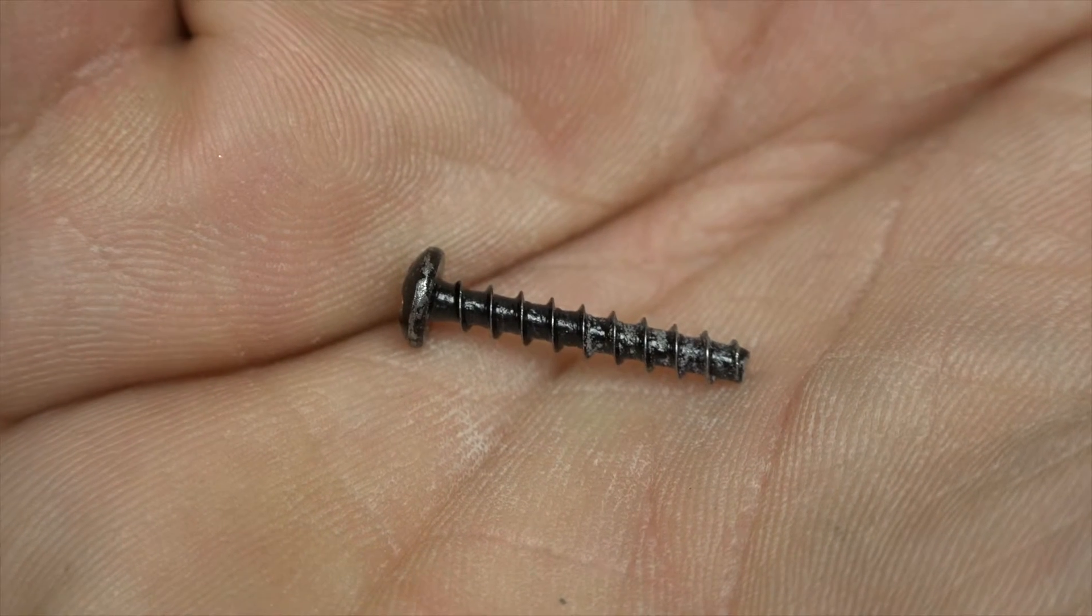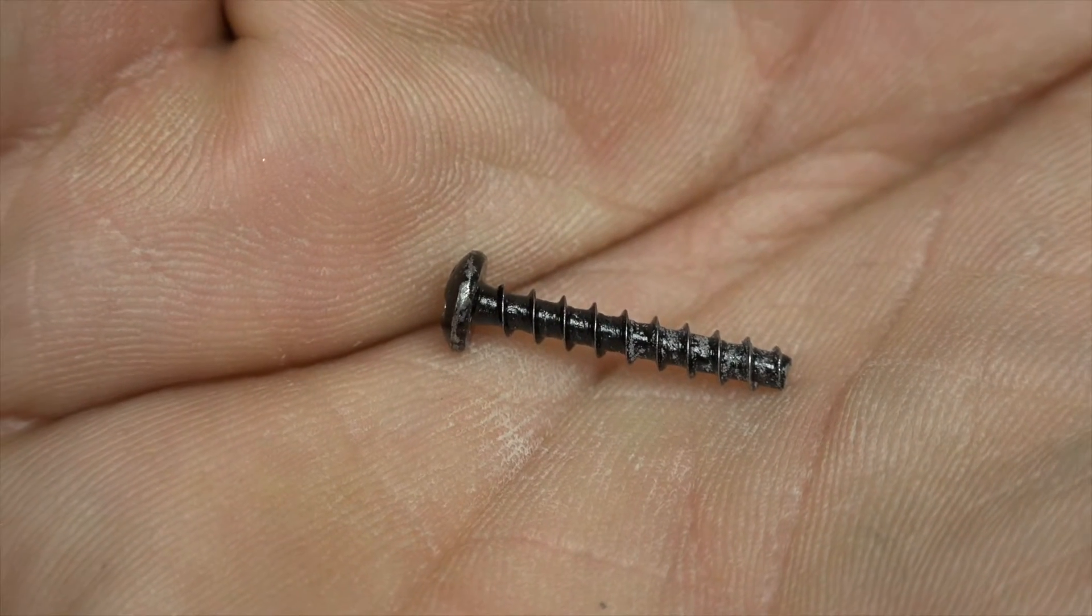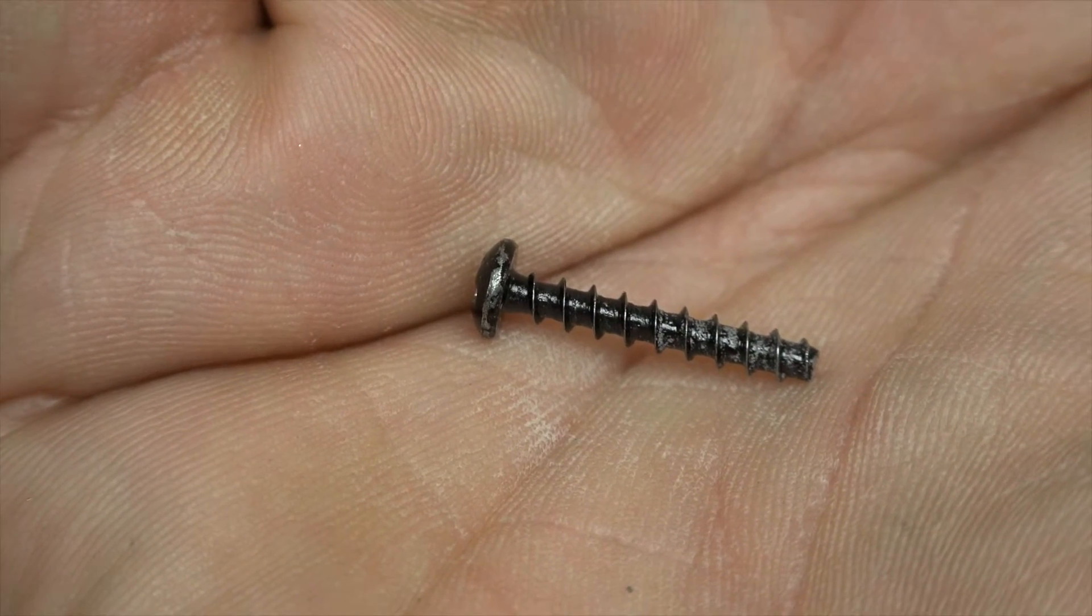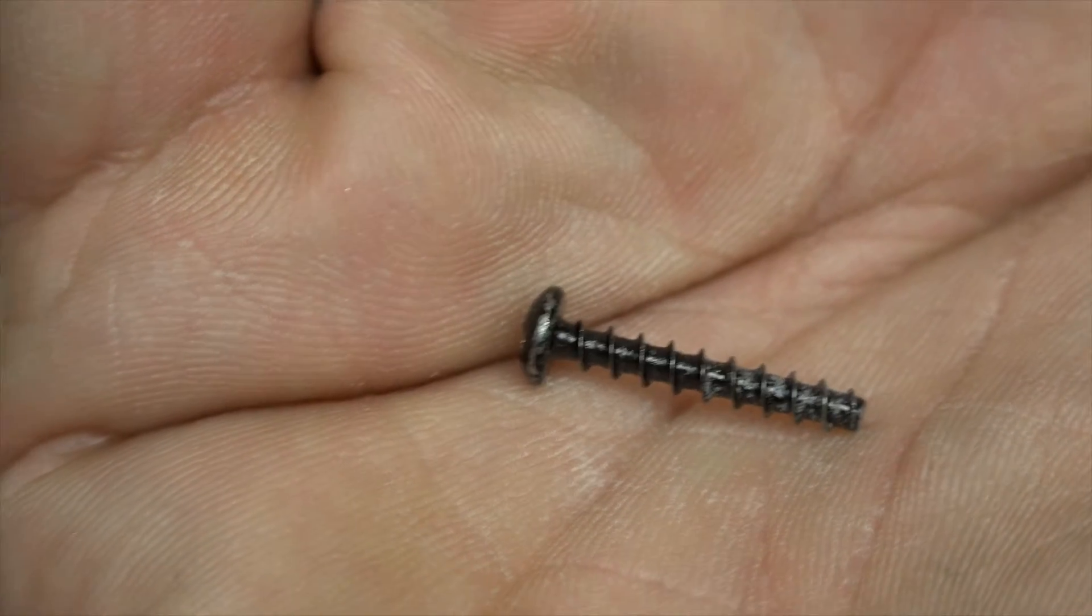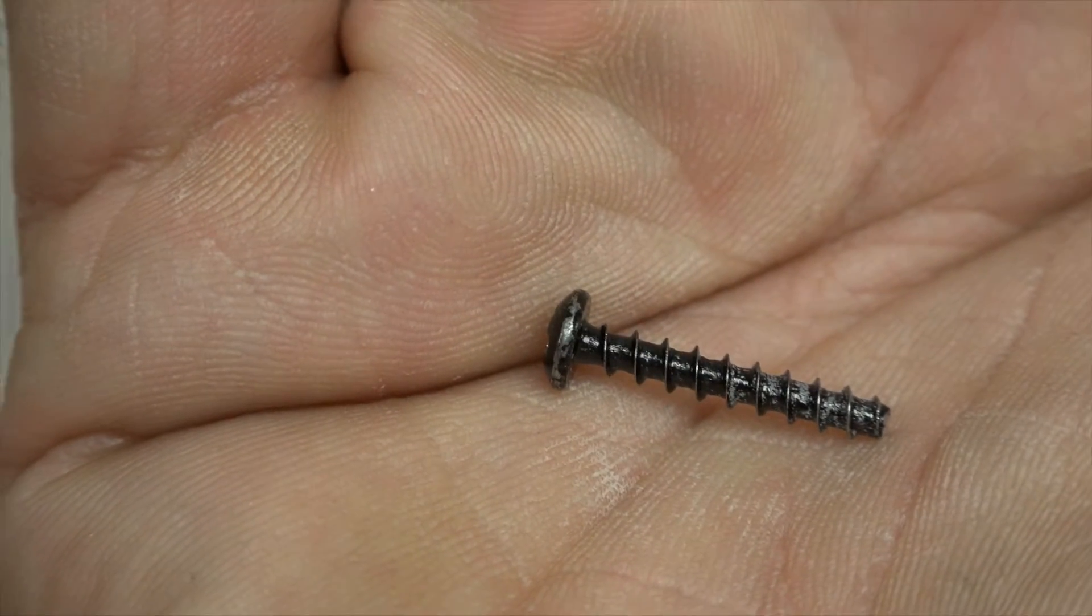One of the problems with this is if you get them cross-threaded, chances are pretty good you're just going to pull all those plastic threads right out of that body, and then you're not going to have any kind of clamping force.